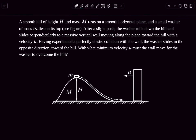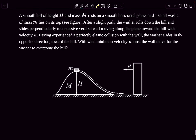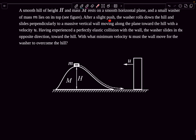Hello everyone, welcome back. Today we have a mechanics problem taken from a Russian olympiad. The question states: we have a smooth hill whose height is h and mass is M, resting on a smooth horizontal plane. A small washer of mass m lies on its top. After a slight push, the washer rolls down the hill and slides perpendicular to a massive vertical wall that is moving along the plane towards the hill with a velocity u. Having experienced a perfectly elastic collision with the wall, the washer slides in the opposite direction towards the hill.